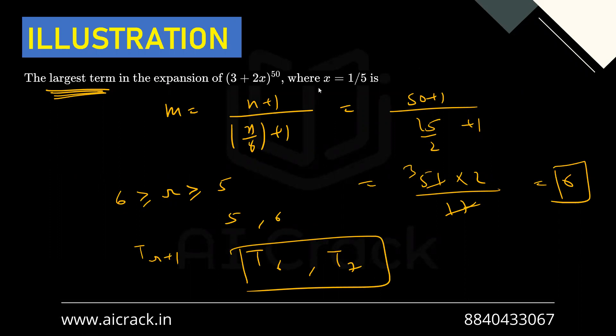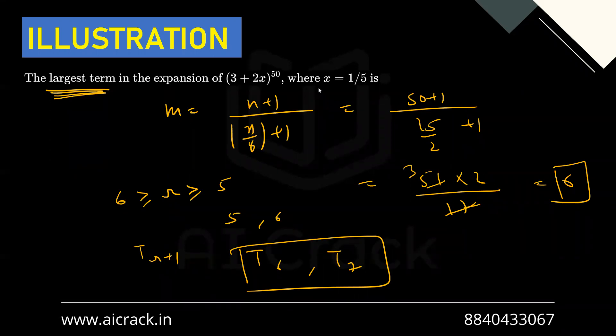Today's lecture ends here. We have studied the most difficult topic of the binomial chapter — the numerically greatest term and coefficient. After this, the rest of the chapter is quite straightforward. Let's meet tomorrow. Thanks for watching.